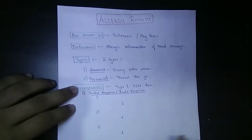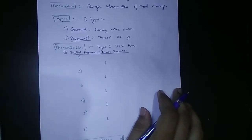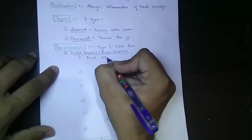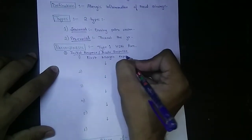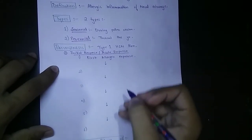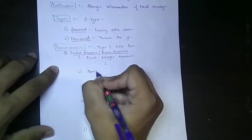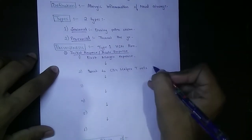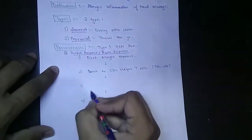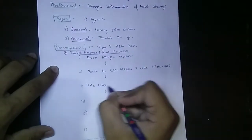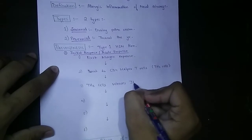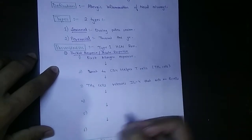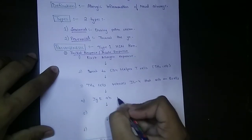There are a total of six steps in the acute response. First, allergen exposure is done. Then it will be presented to Th2 CD4 helper T cells. These Th2 cells release interleukin-4, which acts on B cells, leading to IgE antibody production.